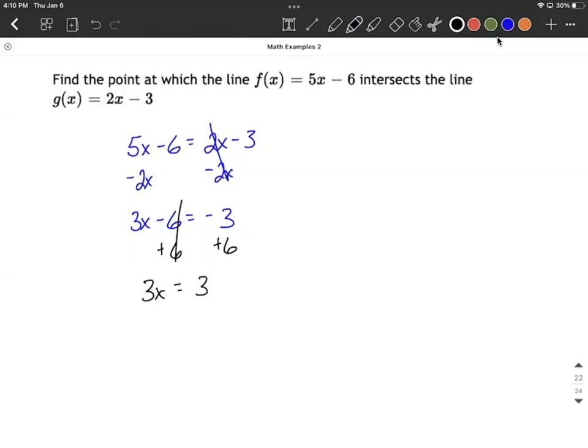To finish this up, we want to get x all by itself. So we need to get rid of that 3 out in front. Well, right now that's connected with multiplication, so what we're going to do is use division on both sides to counteract that. So 3 over 3 makes 1x. And then over on the right-hand side, 3 over 3 also makes 1.